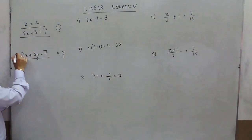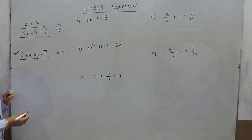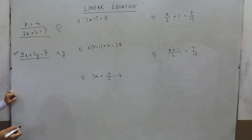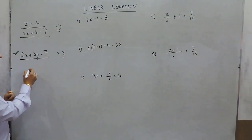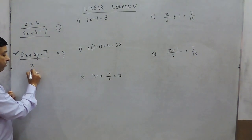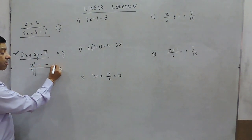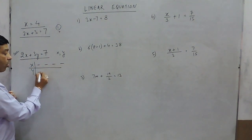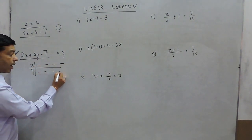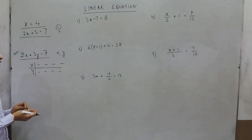If I take the equation 2x plus 3y equals 7 and want to find the values of x and y, there are various values of x possible, and for the same equation various values of y are also possible.